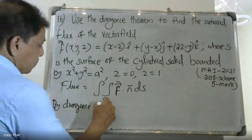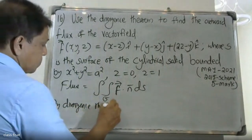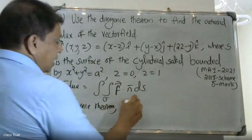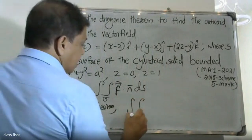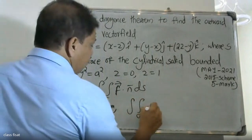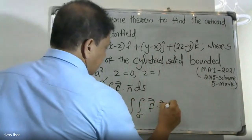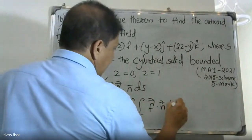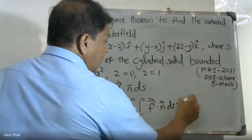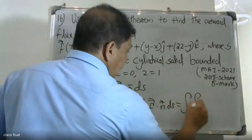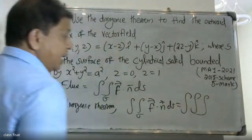By the divergence theorem, the flux equals the double integral over sigma of F dot n dS, which equals the triple integral of the divergence of F over the volume.